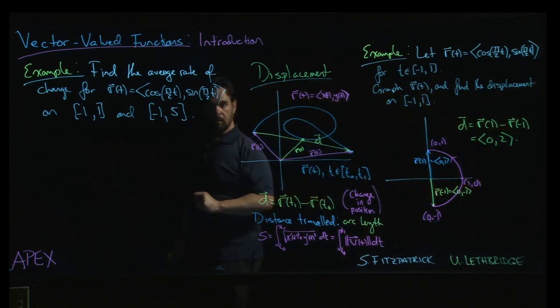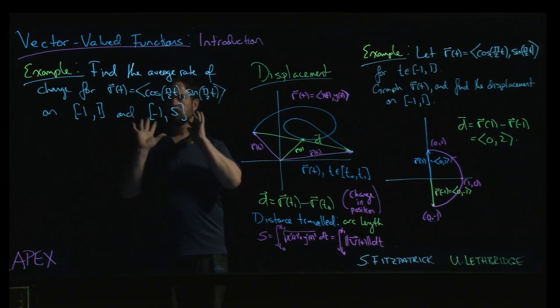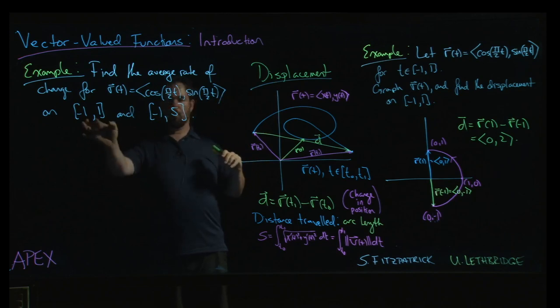Alright, we've got one last example for this section. We're going to find the average rate of change for the same function as the previous example over the interval we were given there as well as another interval.